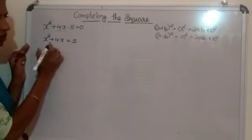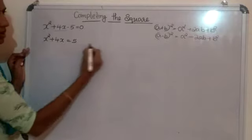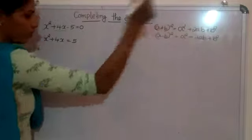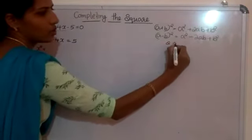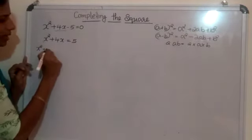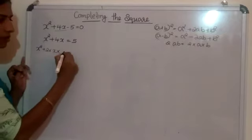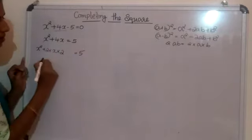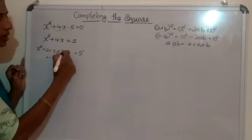Now, this equation is in the form x² + 2ab. We don't have the b² term yet. To find b, we write 4x as 2 × x × b. So 2ab means 2 × x × 2, which gives us 4x. Therefore, the value of b is 2.